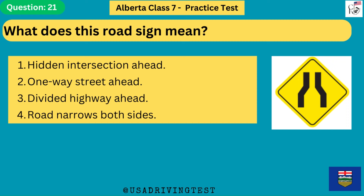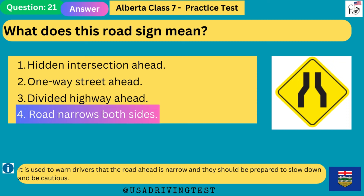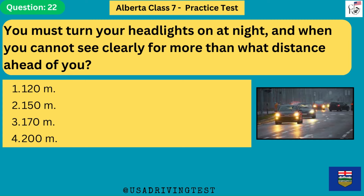What does this road sign mean? 1. Hidden intersection ahead. 2. One-way street ahead. 3. Divided highway ahead. 4. Road narrows both sides. The answer is 4: road narrows both sides. It is used to warn drivers that the road ahead is narrow and they should be prepared to slow down and be cautious.